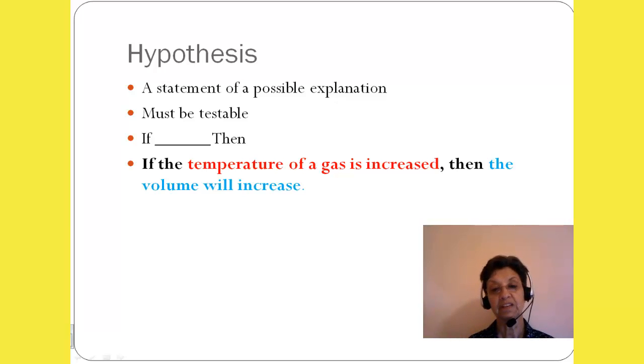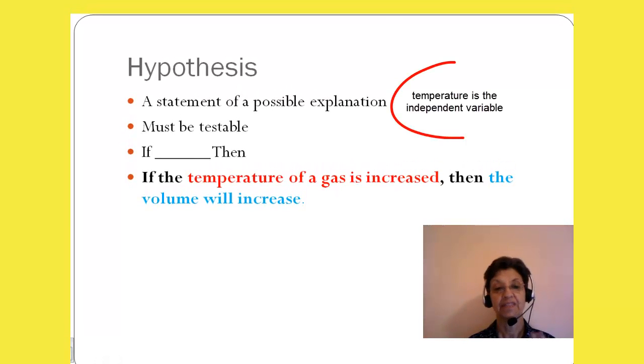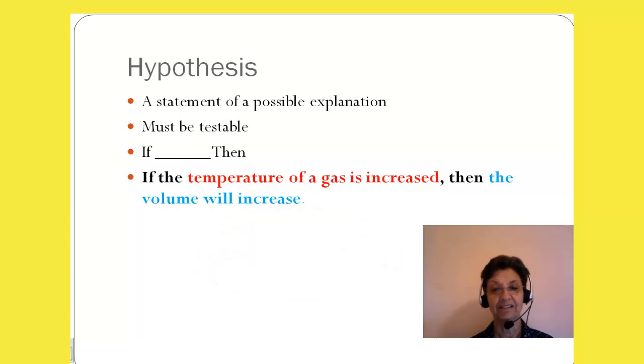Notice that I wrote the statement in red and blue and black in the if and then portion. The red statement indicates the independent variable. Then the blue statement, the volume will increase, it is the dependent variable. Because the result, the volume depends on the temperature of the gas.